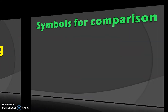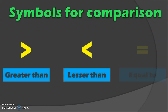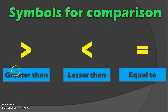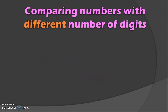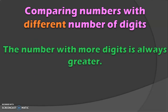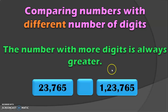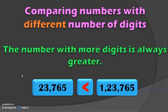Let us begin with comparing numbers and have a quick revision of the symbols used for comparison: greater than, less than, and equal to. Let us begin comparing numbers with different number of digits first. The number with more digits is always greater. Here we have a 5 digit and a 6 digit number. With that itself, we can say the 5 digit number 23,765 is lesser than 1,23,765. When the number of digits is less, the number is lesser than the other.